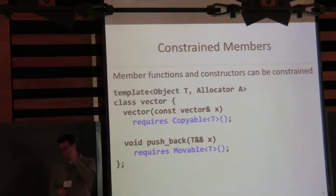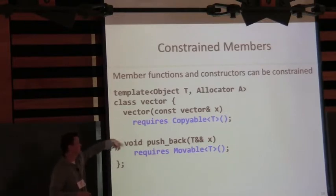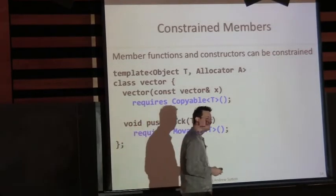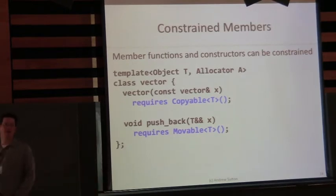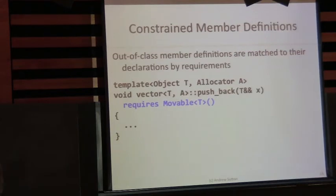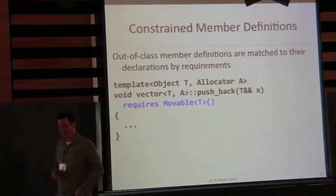We can constrain member function templates. There's a slight change in syntax from what you would have seen at Bristol — we used to have the requires clause preceding the declaration, but due to some interesting parsing issues we actually moved it to the back. I actually think this looks a little bit better because now all of your declarations start at the same point in the column. The comment is that we can't do this today — you actually have to make your member functions function templates in order to get constraints on them. This is actually very new; you can't do this in C++11. Out-of-class member definitions work the same way. The requires clause follows the return type — you write everything for your regular declaration, then you write the requires clause.